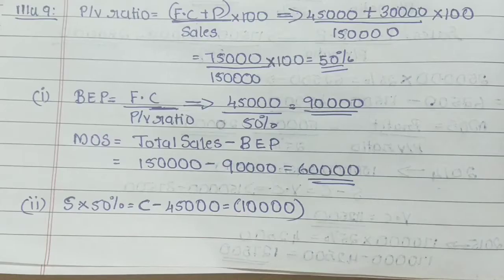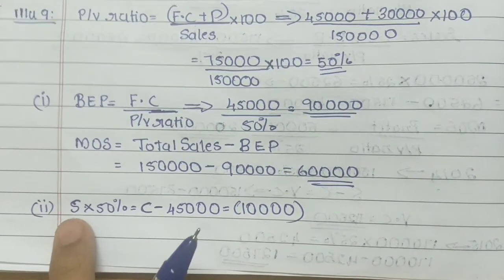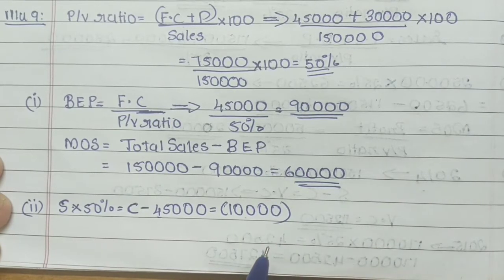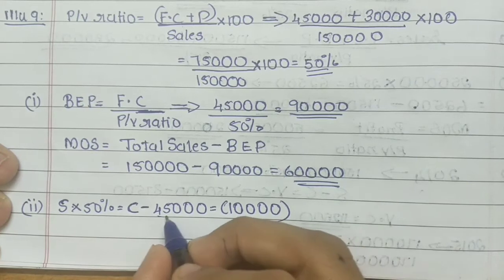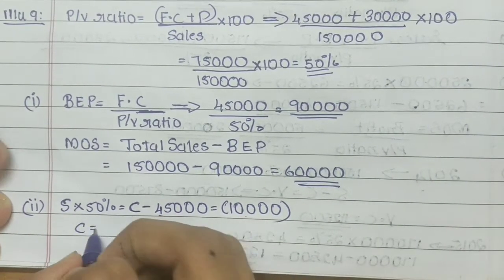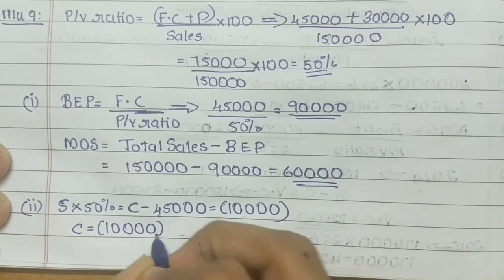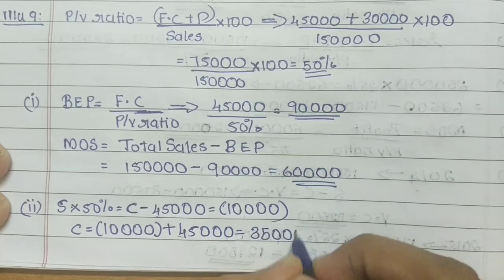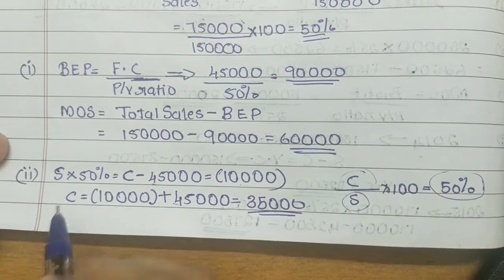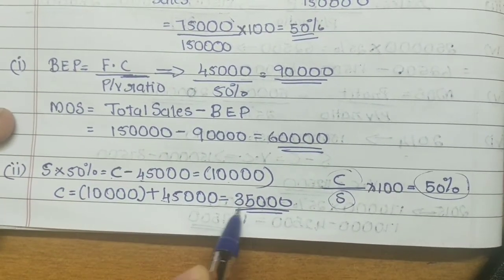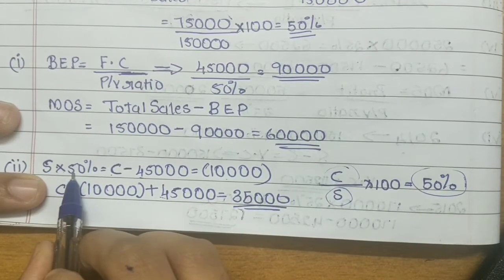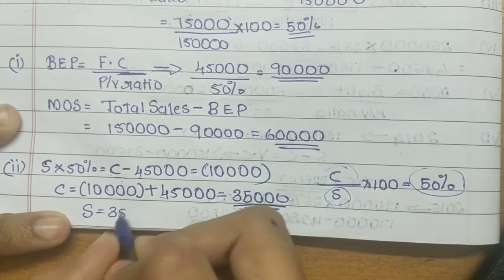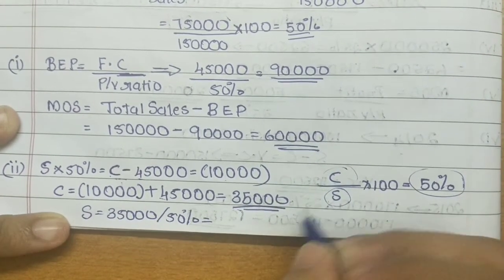Second half: the sales figure is required. Fixed cost is $45,000. Contribution minus fixed cost gives profit. Contribution is negative $10,000 plus $45,000 equals positive $35,000. So contribution is $35,000. If contribution equals sales multiplied by 50%, then sales equals $35,000 divided by 50%, which gives us expected sales of $70,000.